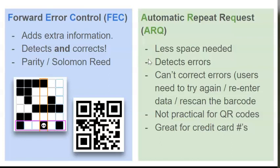There are two different kinds of error control. We've already talked about forward error control, where we add extra information. This both detects and corrects within reason, and our example is parity and Reed-Solomon, which is the algorithm that lies behind our QR codes.